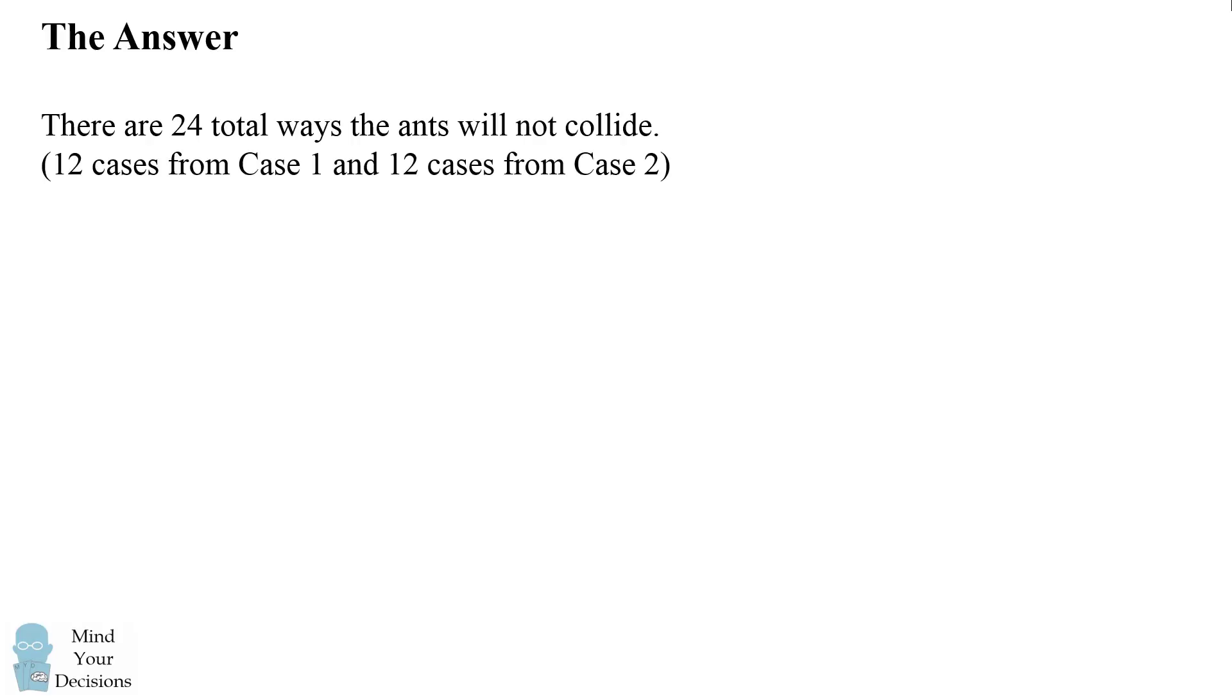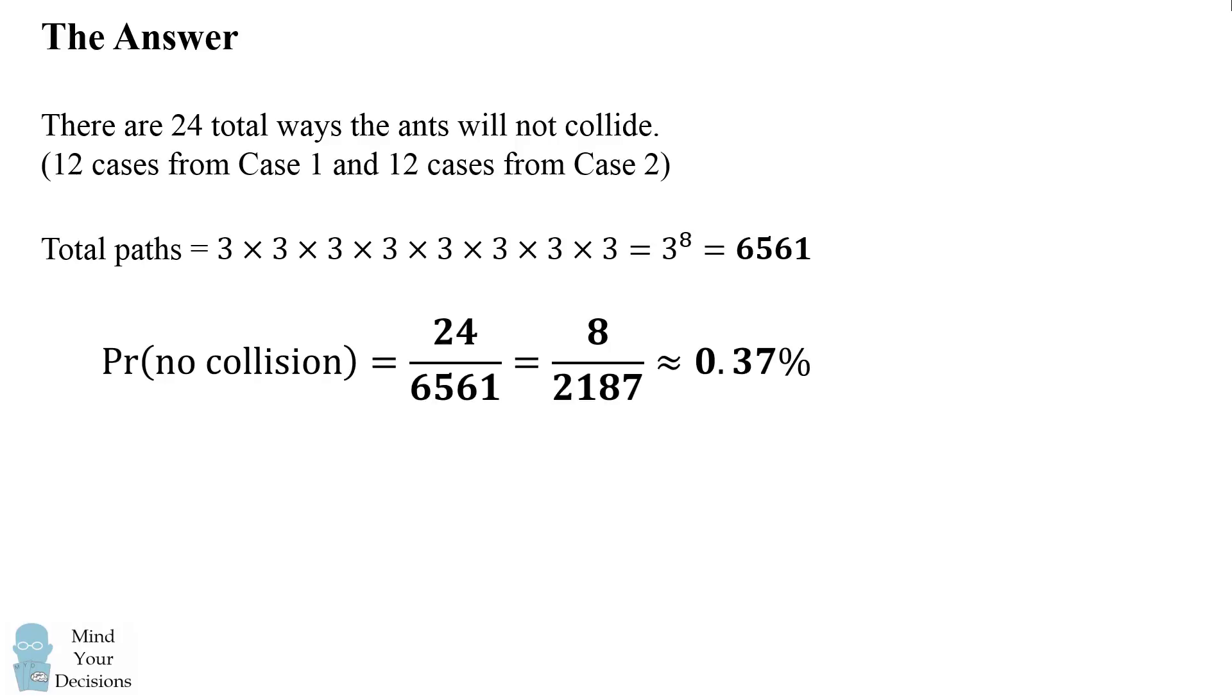There are 24 total ways that the ants will not collide. We have 12 cases from case 1 and 12 cases from case 2. This is out of a total of 6561 possible ways the ants could move. Therefore the probability that there's no collision will be 24 divided by 6561, which equals 8 out of 2187, which is approximately 0.37 percent. It's a very slim chance that the ants will not collide, but it involves very interesting geometrical loops that are on the cube.